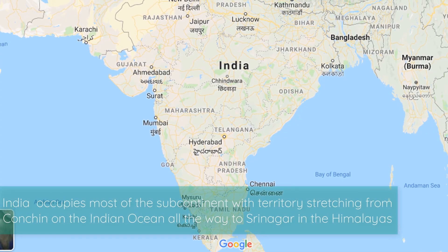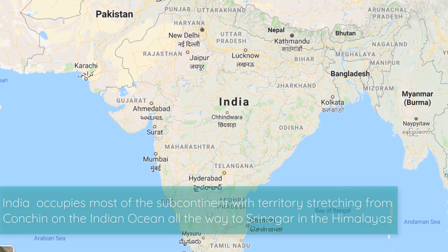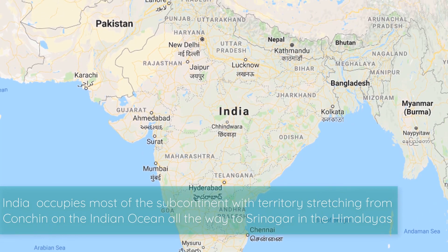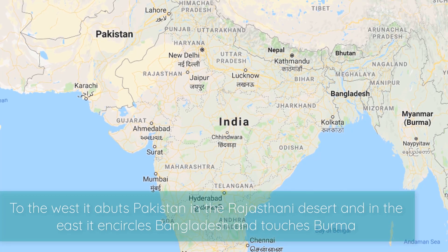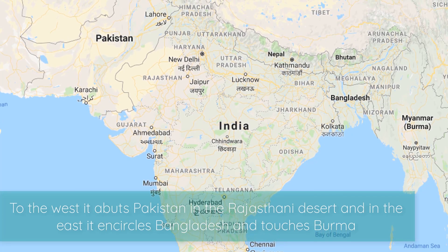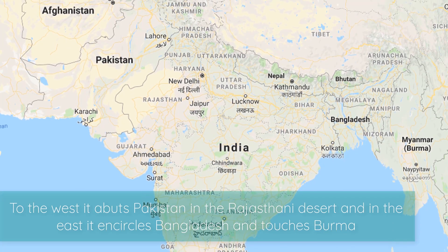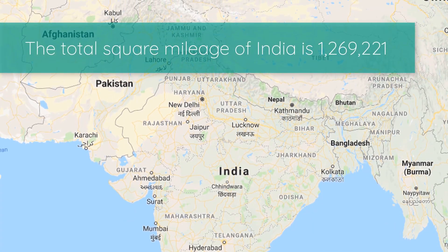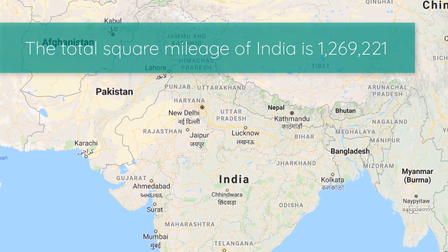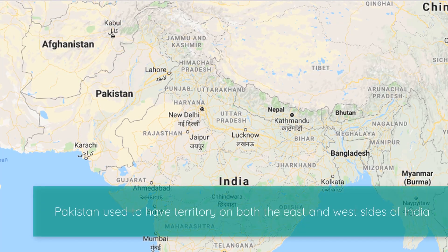The geography of India and Pakistan: India occupies most of the subcontinent, with territory stretching from Kanyakumari on the Indian Ocean all the way to Srinagar in the Himalayas. To the west it abuts Pakistan in the Rajasthani Desert, and to the east it encircles Bangladesh and touches Burma. The total area of India is 1,269,221 square miles.